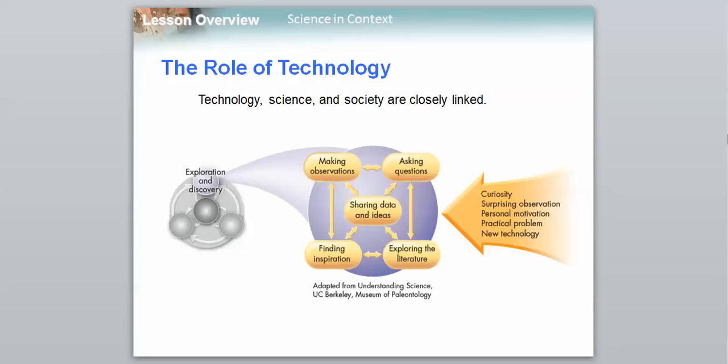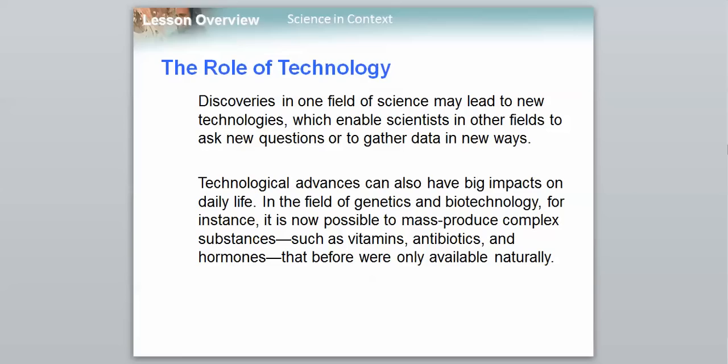And then we're going to talk about technology, how they are closely related with science and society. Technology is big because discoveries in one field of science may lead to new technologies. That's a big thing, that science is what we use to discover, to actually make the technology, and technology is how we apply the knowledge. We can use the technology to help sciences in other fields, to ask new questions, or to gather data in new ways. Technological advances can have big impacts on daily life. For example, in the fields of genetics and biotechnology, it is now possible to mass produce complex substances, such as vitamins, antibiotics, and hormones, that before were only available naturally. So the advances in science, the ability to make these vitamins, is applied to the new technology, which is actually making them and having them in a way that's easily distributed to the masses. That's an example of how technology and science are really closely related.